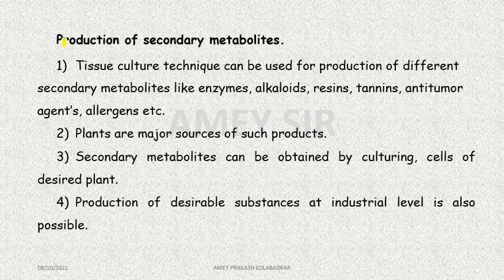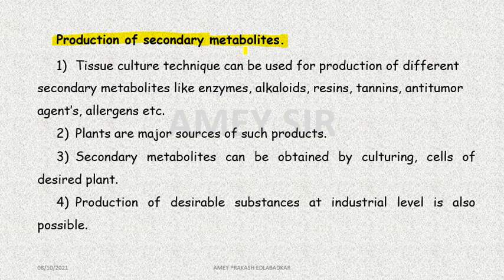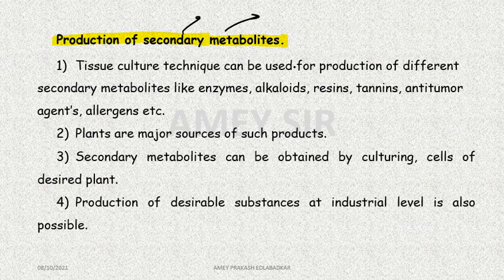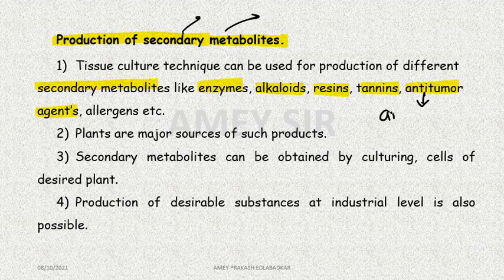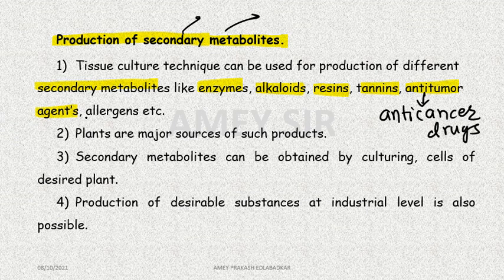Now, secondary metabolites. The word 'metabolite' means compounds formed during the process of metabolism — these are primary and secondary. Tissue culture technique can be used for production of different secondary metabolites like enzymes, alkaloids, resins, tannins, and anti-tumor agents — that is, anti-cancer drugs. This point should be remembered. Allergens can also be developed. The major source of all these compounds is plants.